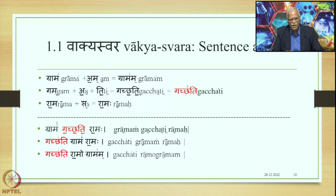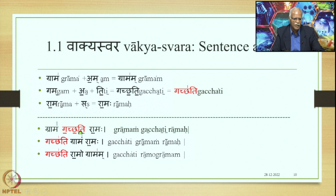The point is that the Pada accents are of a particular kind — they come from the adjoining of the Prakriti and Pratyaya accents. However, when we join the Padas, there is another additional sentential Swara, the Vakyaswara, that takes place. As a result, in the first case we have Gachyati without any Udatta, whereas in the Pada accent, Gachyati is initially accented. So this is the Vakyaswara.